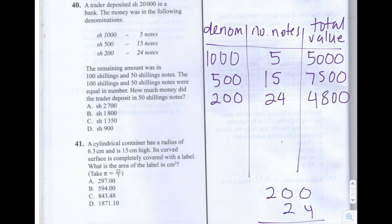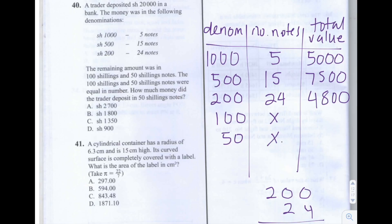The remaining amount was deposited in 100 shillings and 50 shilling notes, and an equal number of each was used. So let's call the number of 100 shilling notes x and also the number of 50 shilling notes x. The total value for 100 shilling notes is 100x, and for 50 shilling notes it is 50x.